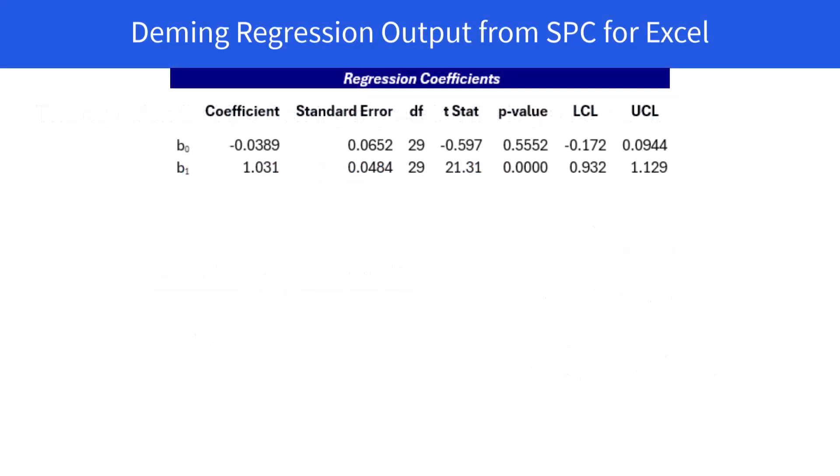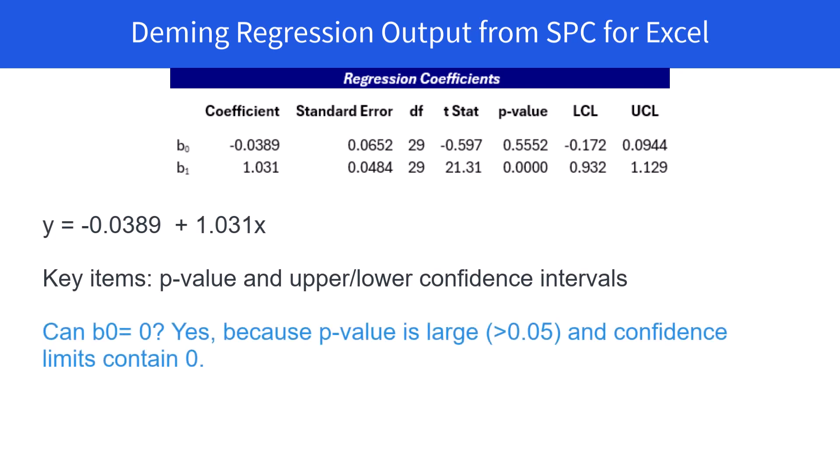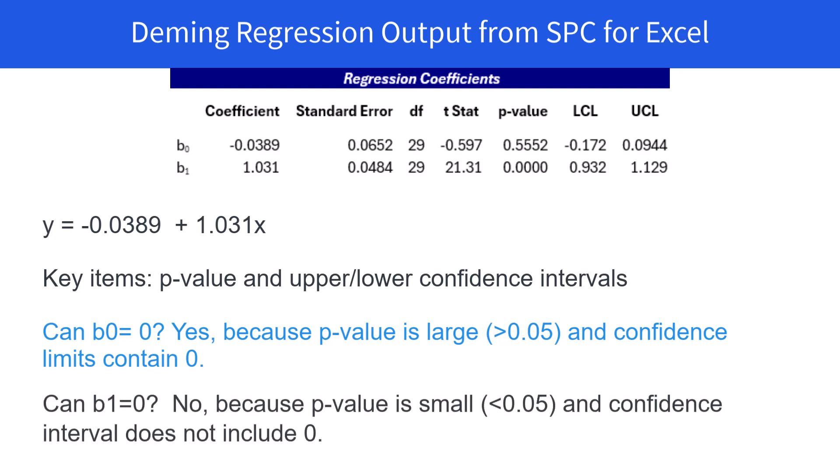So let's look at the output from SPC for Excel. Here's a regression coefficient table. It gives the intercept and the slope, B0 and B1. But the one we're going to focus on are the p-values and the lower and upper confidence limits. The question is, can B0 equal 0? Yes, it can because the p-value is large and the confidence limits contain 0.